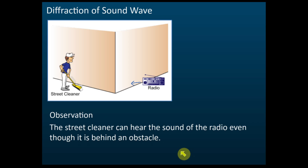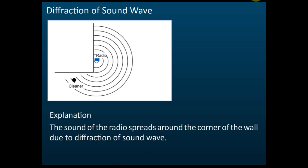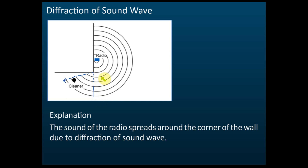Why? Because the radio produces a sound wave, and after the wave passes through this obstacle — the building — the wave is diffracted; it is spread. Suppose the wave just moved forward in a straight line, but when a wave passes through an obstacle, it will spread out to a wider area.